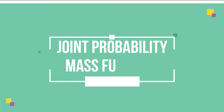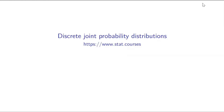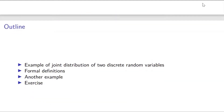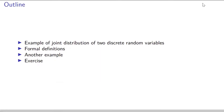Welcome back, everybody. Today we're going to talk about discrete joint probability distributions. We will start with an example, something you can relate to, hopefully. And then we will formally define what a joint distribution of two discrete random variables is. We will follow that with another example, then give you an exercise for you to work on, so you can practice and get good at this.